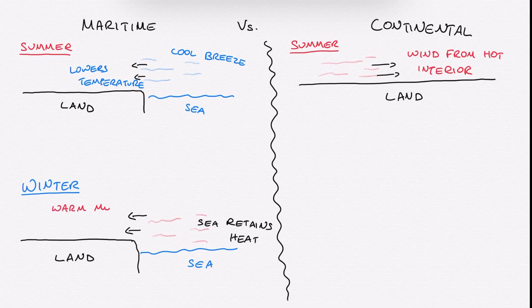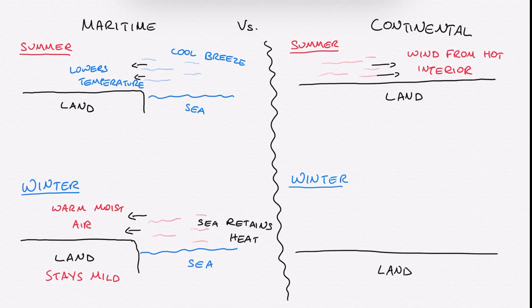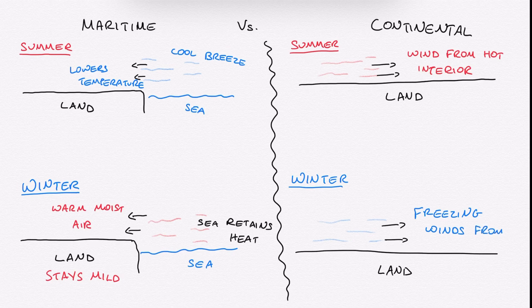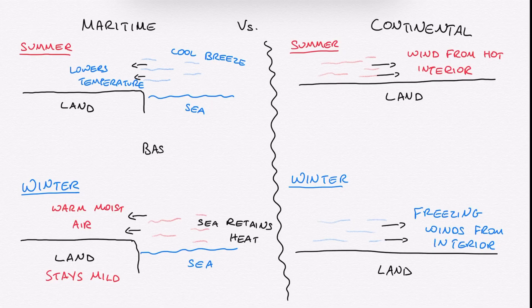In winter, again, as with the continental climate in summer, the land cools very, very quickly, and therefore any temperature or wind that is coming from the land is likely to be freezing. This is why any winds that come from the interior of continents are icy cold. So the basic rule is that the sea makes all of the temperatures more mild, both in the summer and also in the winter.